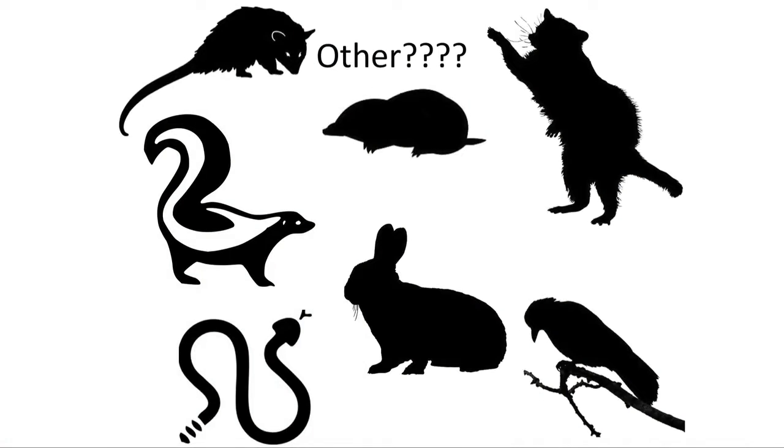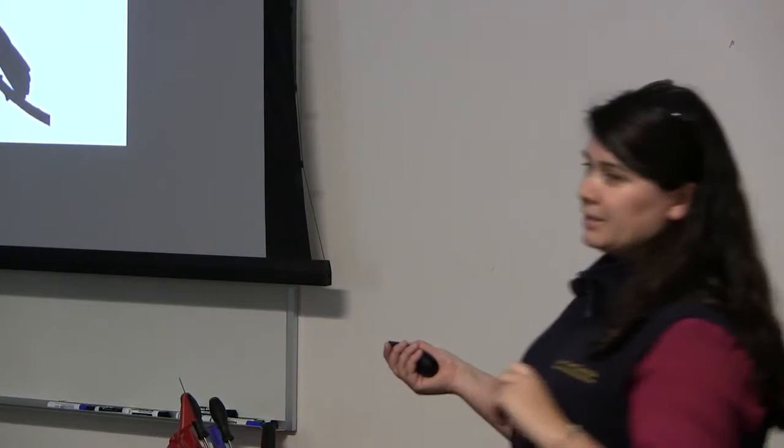Mountain lions aren't what you'd think of as a pest, but the second biggest cause of death to mountain lions in this area is depredation permits — issued to people whose livestock has been killed by mountain lions. The number one cause of death is cars. Other pests include rabbits, skunks, raccoons, possums, snakes, and birds — all considered pests depending on what they do.